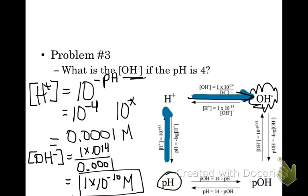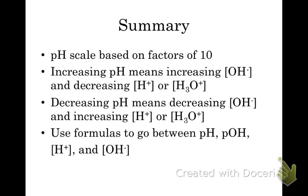Quick summary: the pH scale is based on factors of 10. Note the notation — lowercase p, uppercase H, since hydrogen is always capitalized. If we increase the pH, OH⁻ concentration increases and H⁺ or H₃O⁺ concentration decreases. If we decrease the pH, OH⁻ decreases and H⁺ or H₃O⁺ increases. Use the formulas to convert between pH, pOH, H⁺, and OH⁻. Let me know if you have any questions — take care and have a good day.